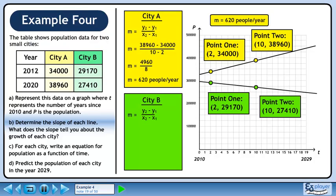Now we'll find the slope for city B. Plug in the values of each point into the slope formula. Simplify the fraction. The slope is minus 220 people per year. Since the slope is negative, people are moving out of this city and population is decreasing.